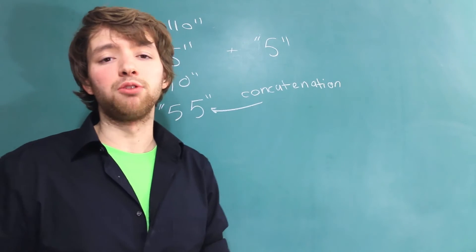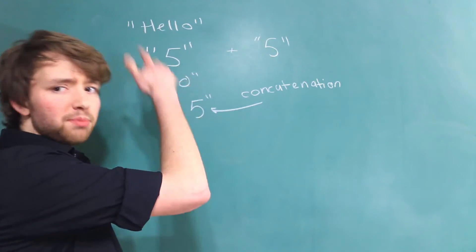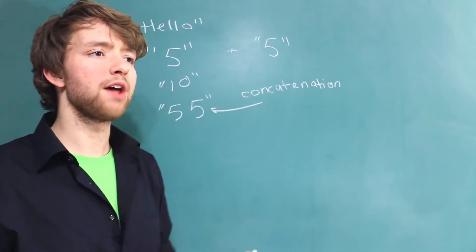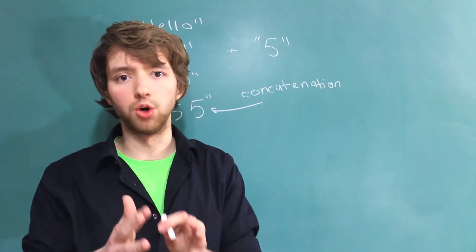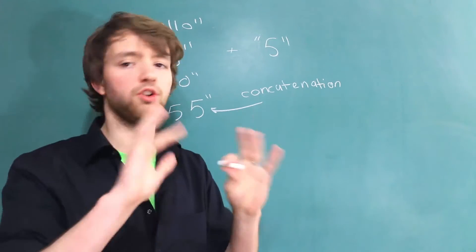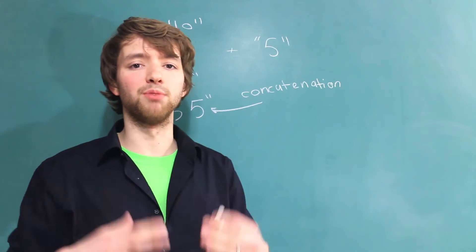Now a loosely typed language doesn't go so far as to only have one data type kind of like everything as strings but they're not quite as strict. So rather than having integers and floats and doubles and signed and unsigned and longs and all that stuff it'll just have like number. So the data types are much more vague.